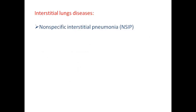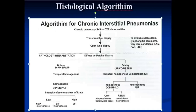Welcome to this video where we will discuss another entity of the interstitial lung diseases: Non-Specific Interstitial Pneumonia (NSIP). Before discussing NSIP further, let's revisit how we approach the chronic interstitial pneumonias. In our histological algorithm, when examining lung parenchyma, we first determine under low power whether the lesion is diffuse and uniform versus patchy. If diffuse and uniform, the three differentials are DIP, NSIP, and Lymphocytic Interstitial Pneumonia (LIP).